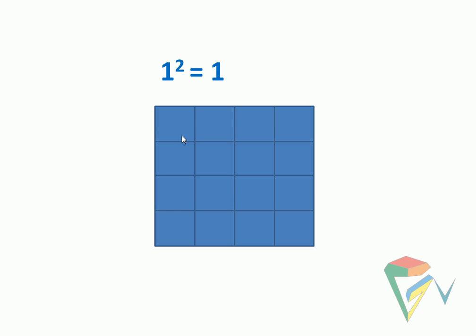So 1² will be 1. That is the entire square. This is the one 4×4 square. So we already finished 1.